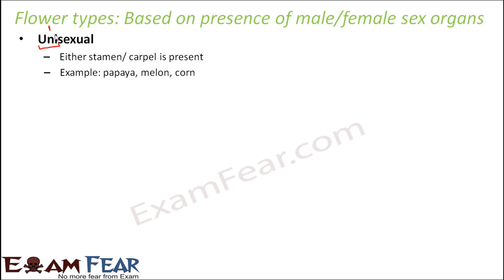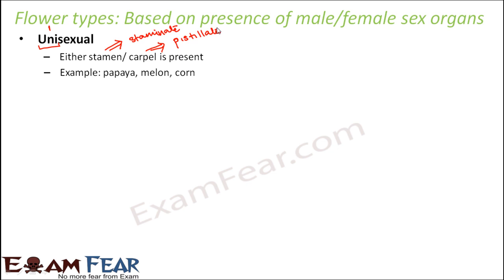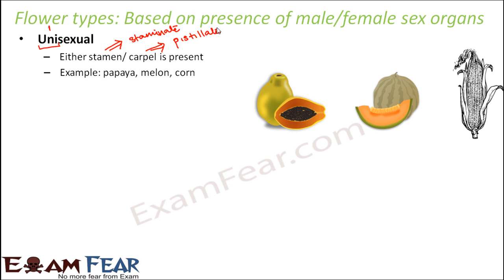Examples of unisexual flowers are papaya, melon, and corn. Flowers where only stamen is present are known as staminate flowers. Similarly, the flowers where only carpel is present — and carpel is also known as pistil — those flowers are called pistillate flowers. So these are examples of unisexual flowers where only one sex organ is present, either male or female.